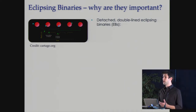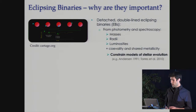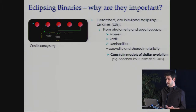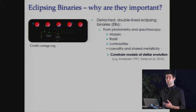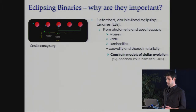By double-lined, I mean you can see the spectral features of both stars. With a system such as this, from photometry and spectroscopy, you can determine the masses and radii to a precision of a few percent or less, and assuming co-evality and shared metallicity, this allows you to place powerful observational constraints on models of stellar evolution.